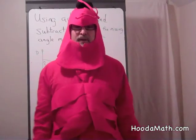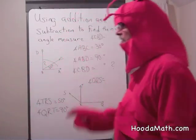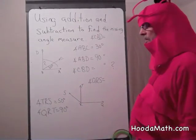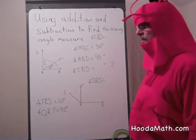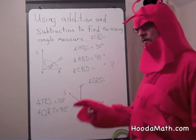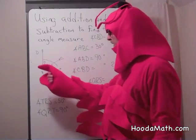Hello, I'm the Math Lobster. In this lesson, we're going to use addition and subtraction to find the missing angle measure. We can do that when we have adjacent angles.